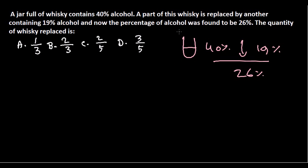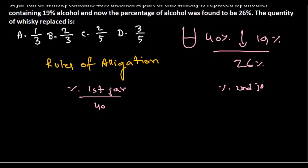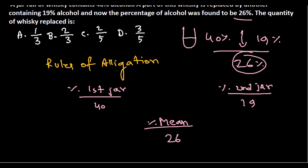This is a kind of allegation problem. By the rules of allegation, we can simply write the percentage of whiskey in the first jar, which is 40%, and the percentage of whiskey in the second jar, which is 19%. The mean percentage is 26%, which is the resulting percentage after replacement.